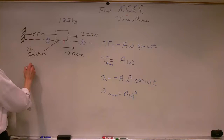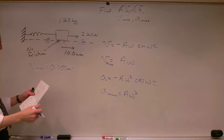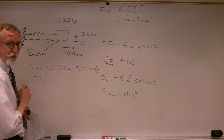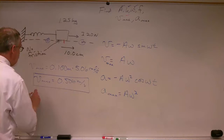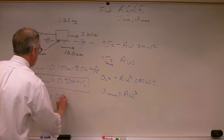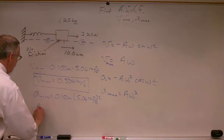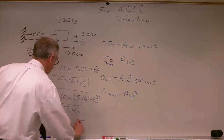Sticking in the numbers: v max equals A times omega — that's 0.100 meters times 5.06 radians per second, giving v max equal to 0.506 meters per second. And a max equals A times omega squared — 0.100 meters times 5.06 radians per second squared — multiply that out and we find a max equals 2.56 meters per second squared.